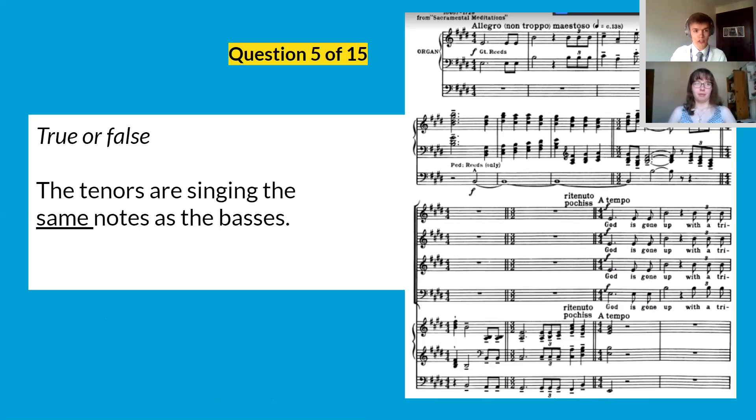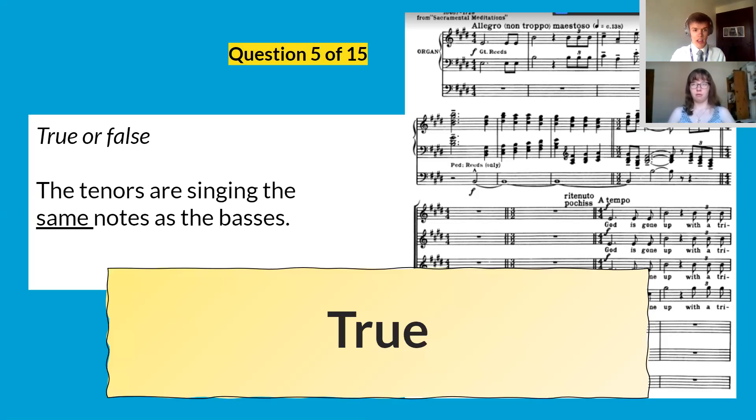Question number five, true or false, the tenors are singing the same notes as the basses. Well there's just the last two bars of the page and they are singing exactly the same notes as the basses. It's what we call a unison when we have two notes that are exactly the same at the same time.